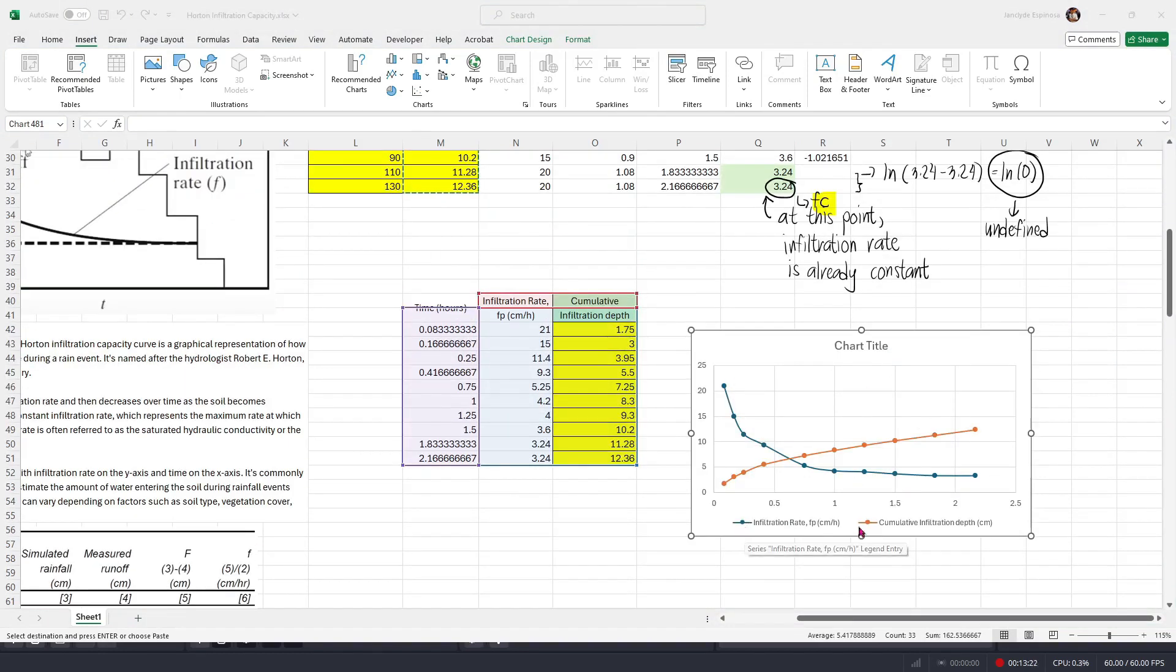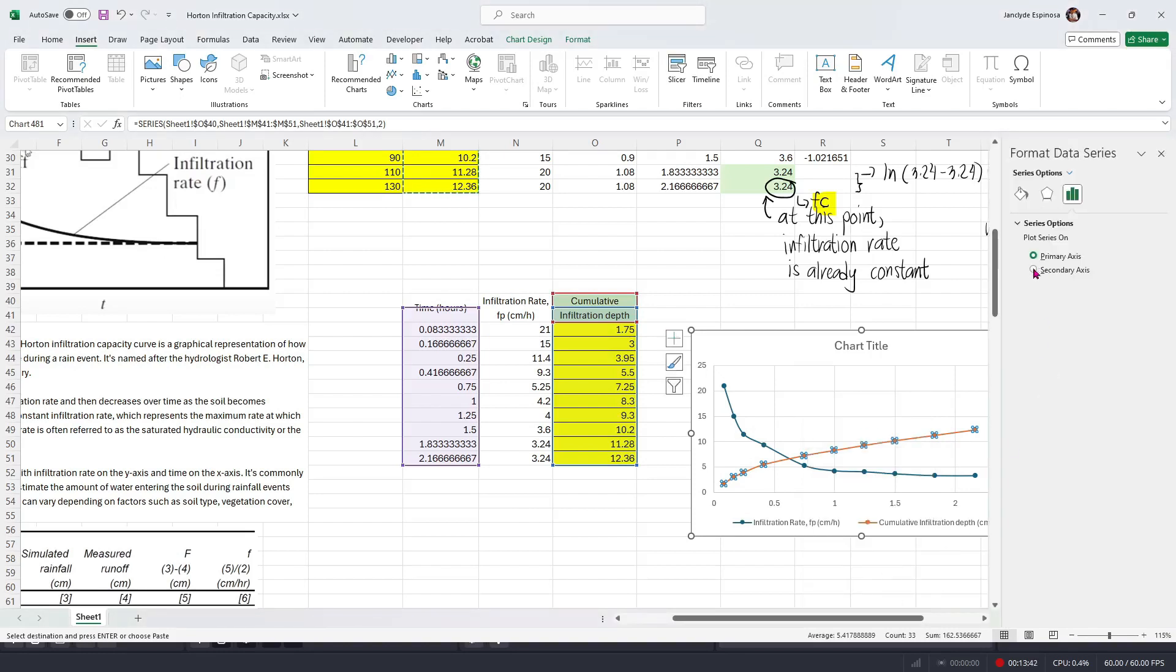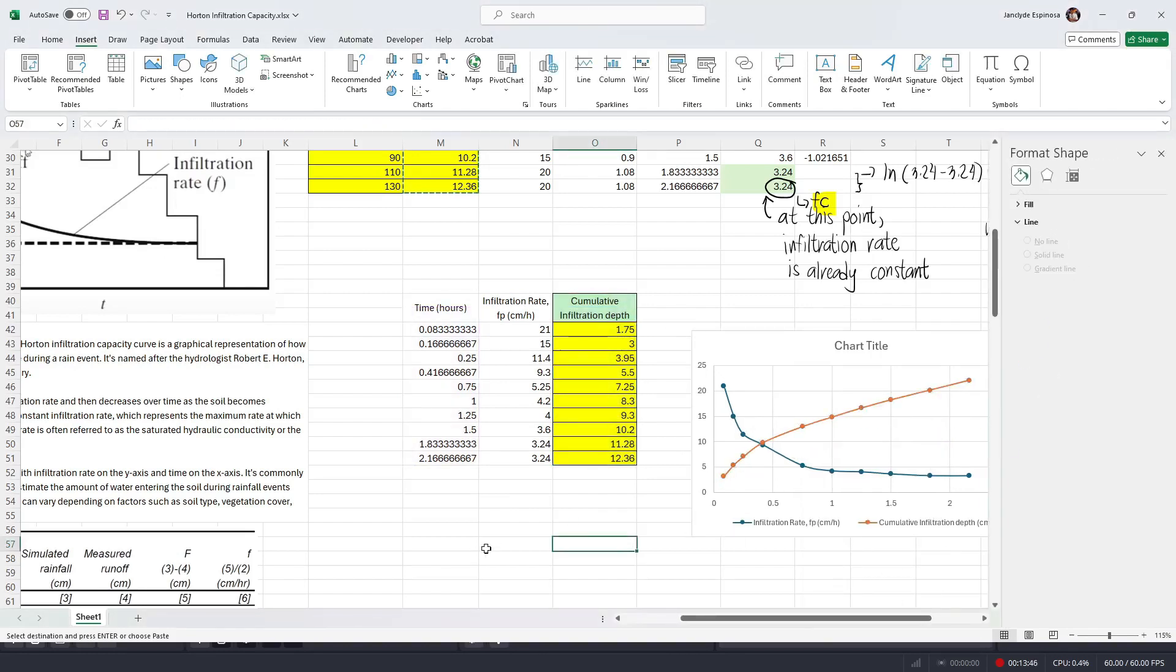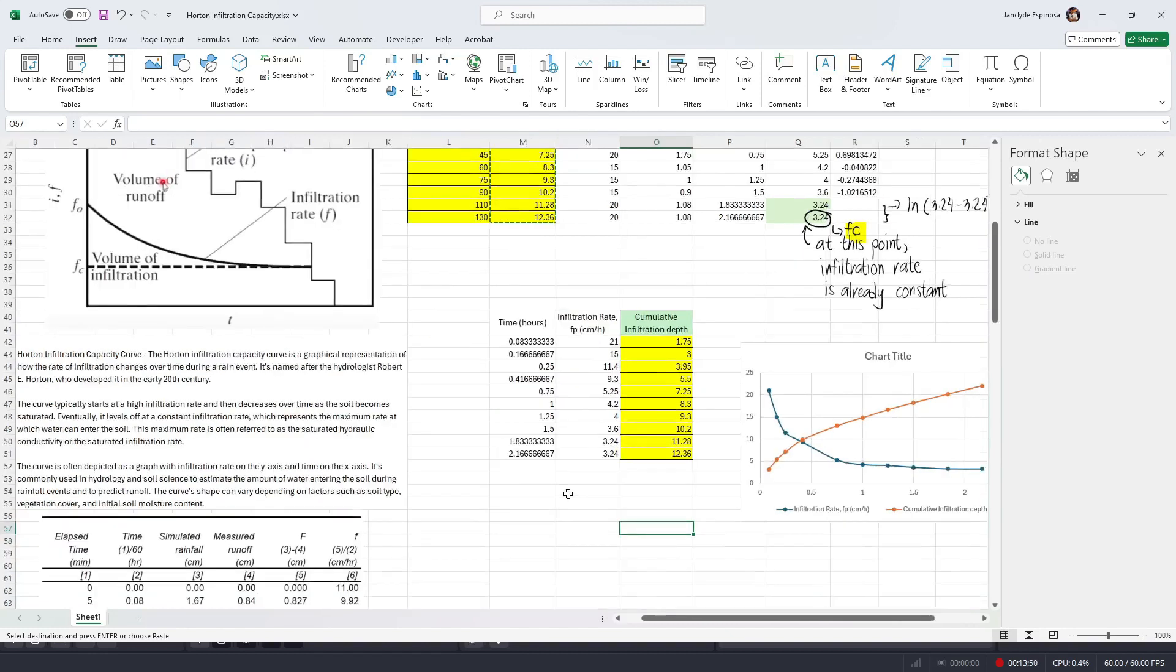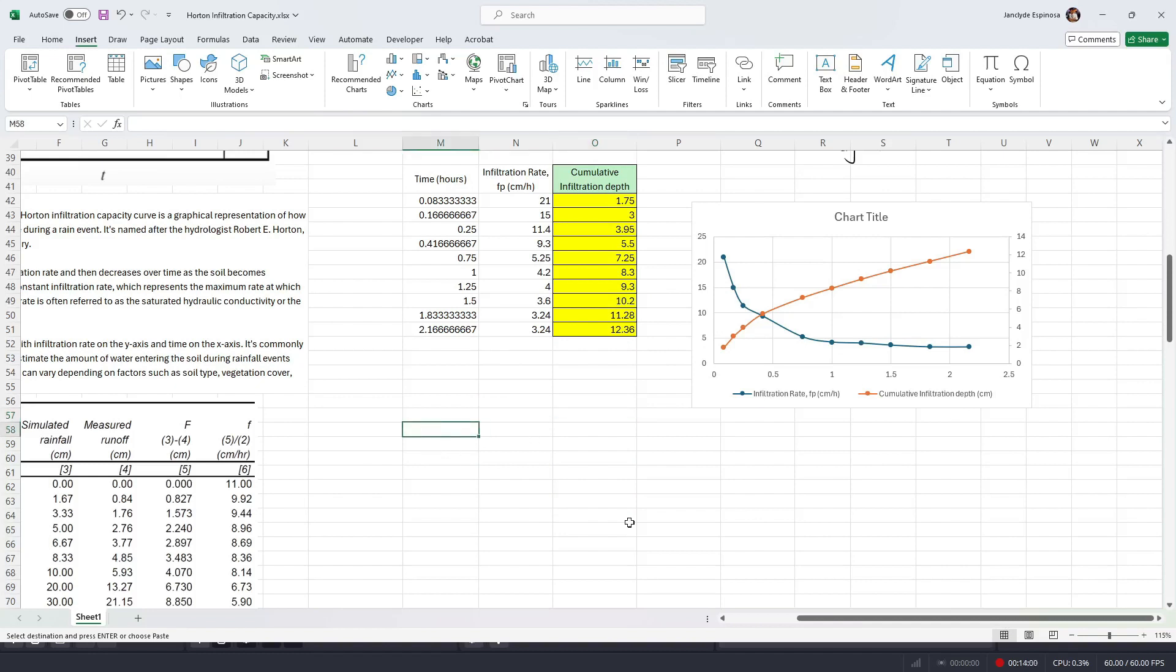Here, the blue curve defines the infiltration rate while the orange one defines the cumulative infiltration depth. We're first gonna change the data series for the cumulative infiltration depth. Let's choose the secondary axis so that it will consider time as its independent variable. Now, as you can notice, the infiltration rate decreases with time until it practically becomes a straight line or constant. The infiltration depth, on the other hand, accumulates over time.